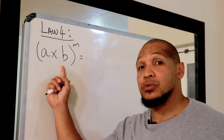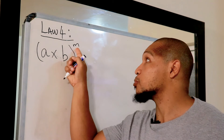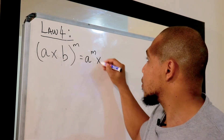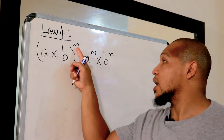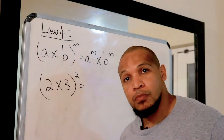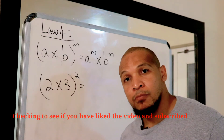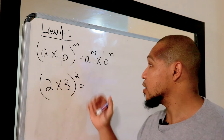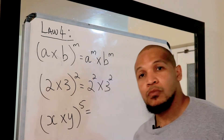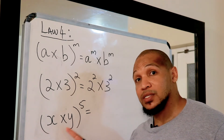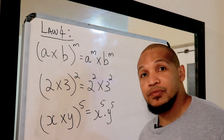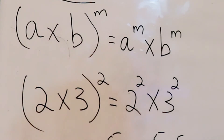Law number four: when we have two unknowns within brackets and an exponent on the outside, that exponent is applicable to both unknowns inside the bracket. We write it as a to the power of m multiplied with p to the power of m. For example, two times three in brackets squared can be written as two squared multiplied by three squared. Another example: x multiplied by y inside the bracket with five on the outside gives us x to the power of five times y to the power of five, because the exponent applies to both terms inside.